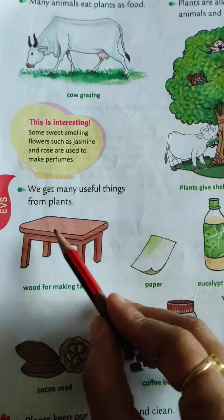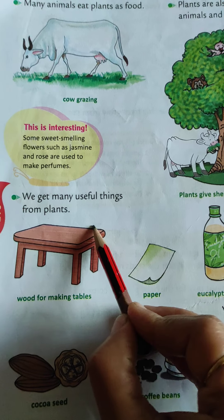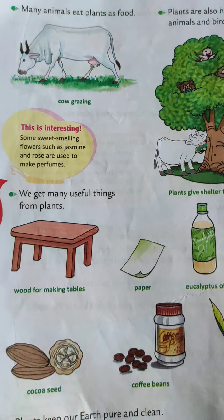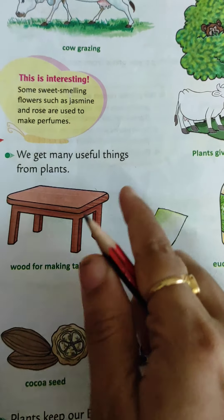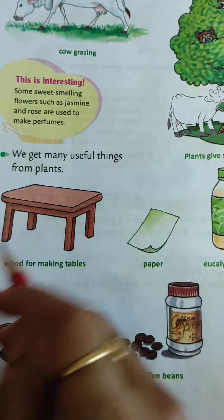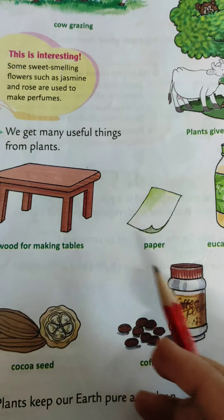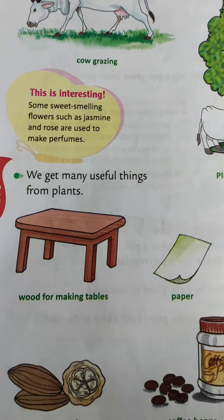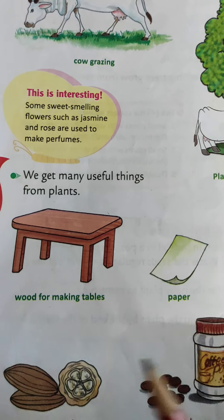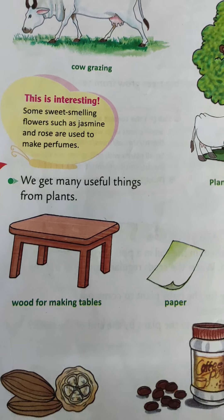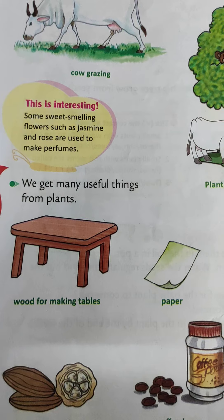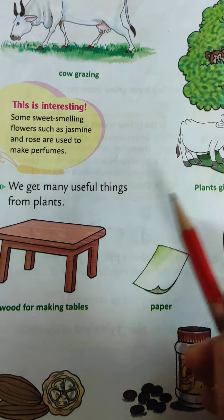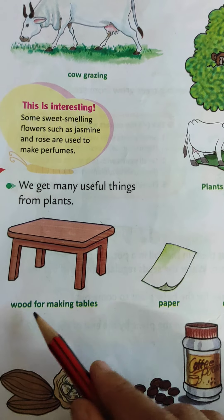We get many useful things from plants. We get wood for making tables, chairs, and cupboards. All these things in our houses are made from the wood of trees. We also use wood to build our houses and buildings.